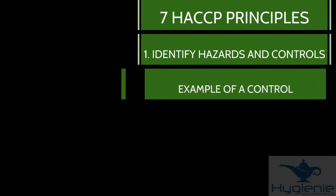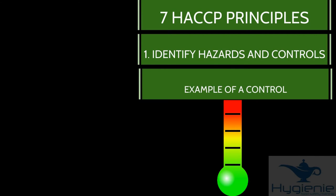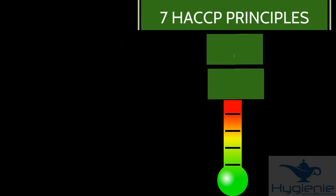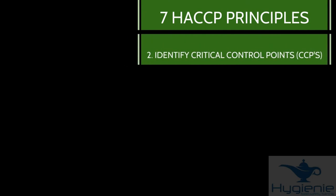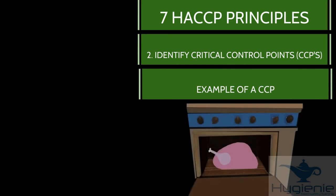An example of a control would be temperature control. Step two, identify critical control points. These are the points in the system that are essential for food safety. If they are controlled the food will be safe to eat. An example of a CCP is cooking the food.